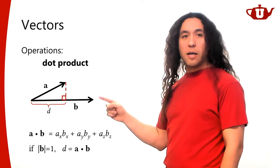The other product is the cross product. The cross product takes two vectors A and B and forms a third vector A cross B. This third vector is perpendicular to both input vectors. A and B don't have to be perpendicular to each other — the result is perpendicular to both of them. We'll often use cross products specifically for this property.